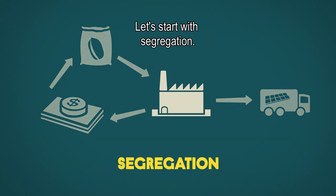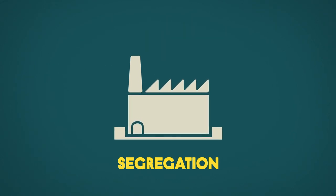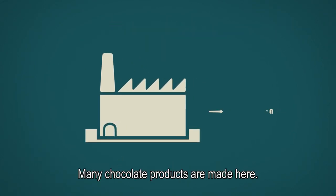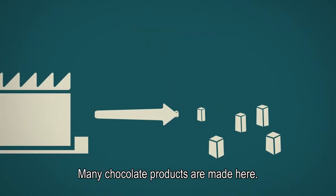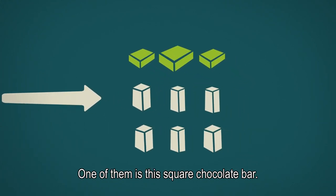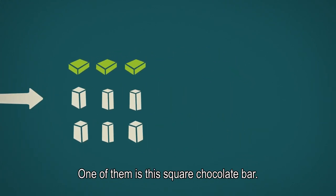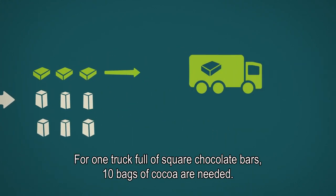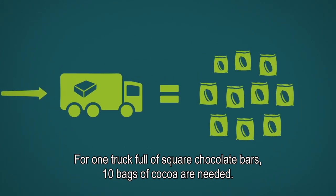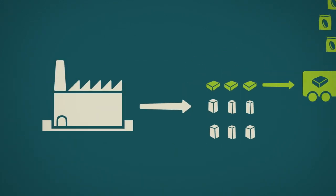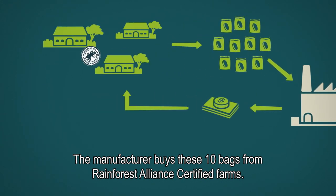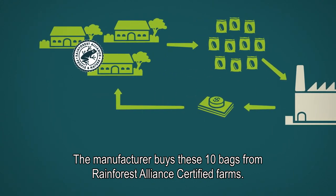Let's start with segregation. This is a chocolate factory where many chocolate products are made. One of them is this square chocolate bar. For one truck full of square chocolate bars, 10 bags of cocoa are needed. The manufacturer buys these 10 bags from Rainforest Alliance certified farms.